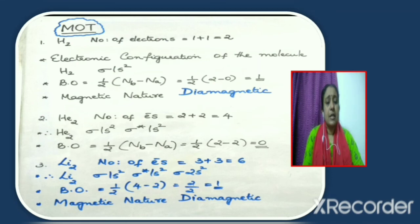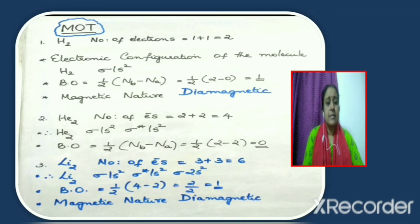Consider hydrogen molecule H2. The total number of electrons in the molecule is equal to 2, so the electronic configuration will be sigma 1s². Bond order = half of (Nb minus Na) = half of (2 minus 0) = 1. The two electrons present are paired, so no unpaired electrons are present. Therefore, hydrogen molecule H2 will be diamagnetic.